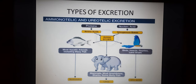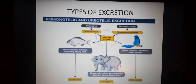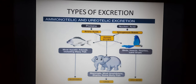In uricotelism, organisms excrete with very little water. Think about birds — they fly very high for a long time and cannot get water in the sky, so they take water very infrequently when they land. Therefore, they perform excretion with minimal water. This process is called uricotelism, and organisms performing it are termed uricotelic. Next I am explaining some excretory organs in animals.